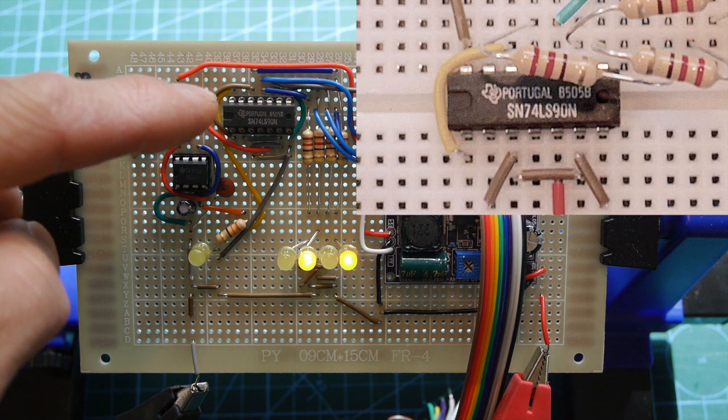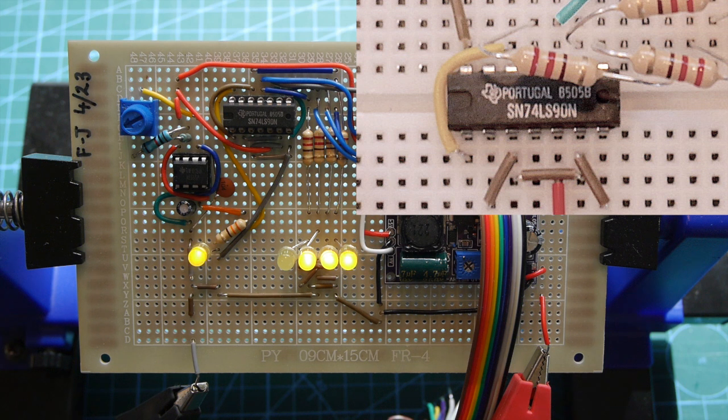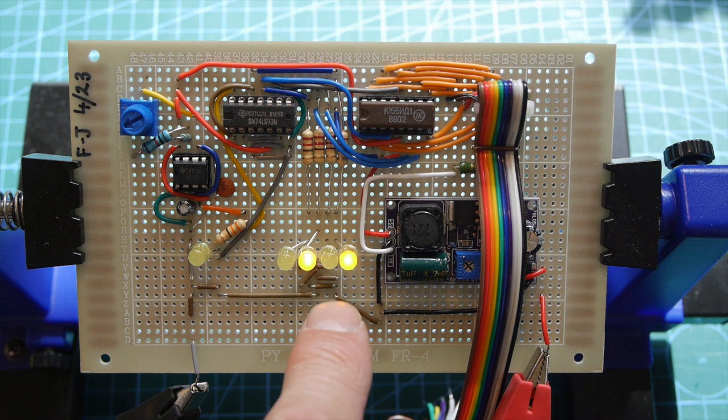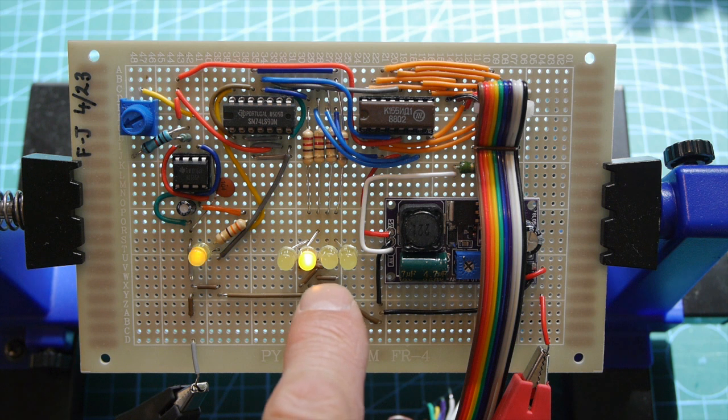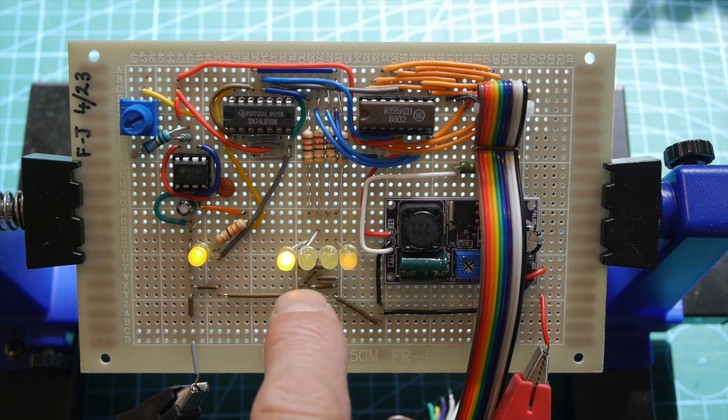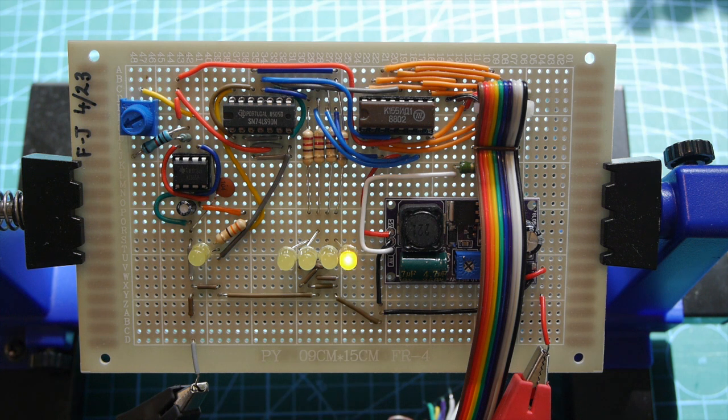Then we've got a decade binary counter. This counter will count up 0, 1, 2, 3, 4, 5, 6, 7, 8, etc. But it does it in binary. We've got some LEDs here that show the binary counting. Just give it a second. There we go. 0, 1, 2, 3, 4, 5, 6, 7, 8, 9, 0. So it's counting up in binary.